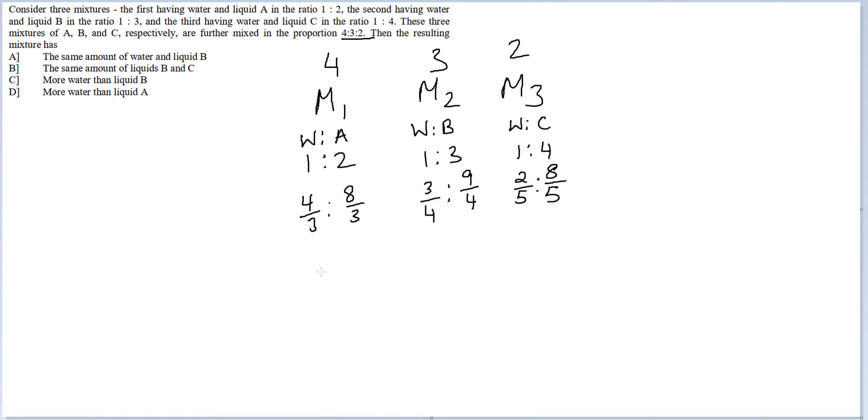So now you can have your final ratio for A, B, C: 8 by 3, 9 by 4, 8 by 5, and water. Let's see if we need to calculate. Water would be 4 by 3 plus 3 by 4 plus 2 by 5.